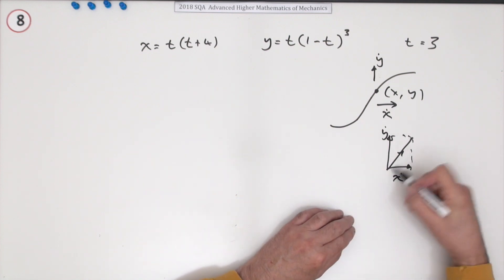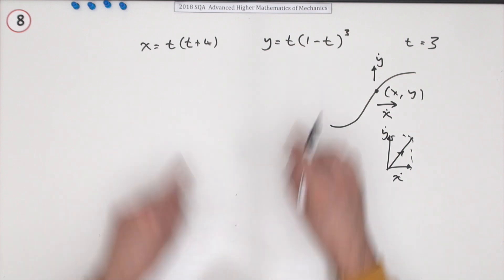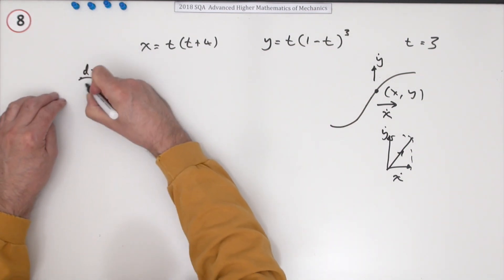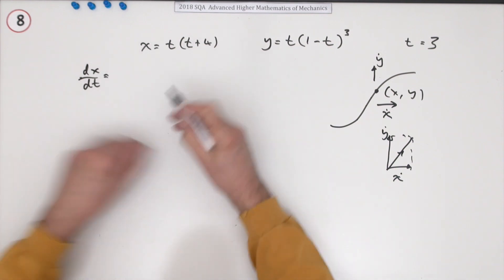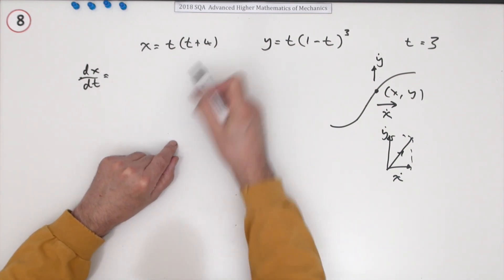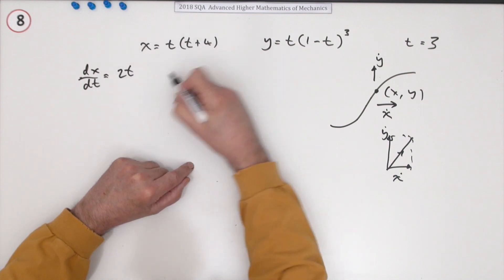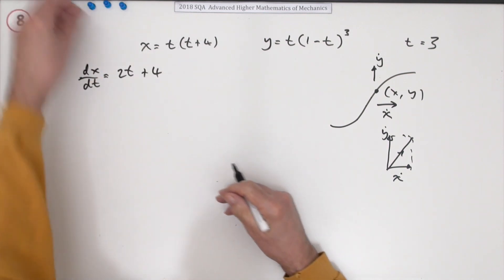So the speed's the length of that, the magnitude of the vector, Pythagoras. That means the first step is differentiate them: dx by dt. Now that's a product, but I'm not going to use the product rule because it's simple just to multiply that out. t squared differentiates to 2t, 4t differentiates to 4, and if you do that you get a mark.